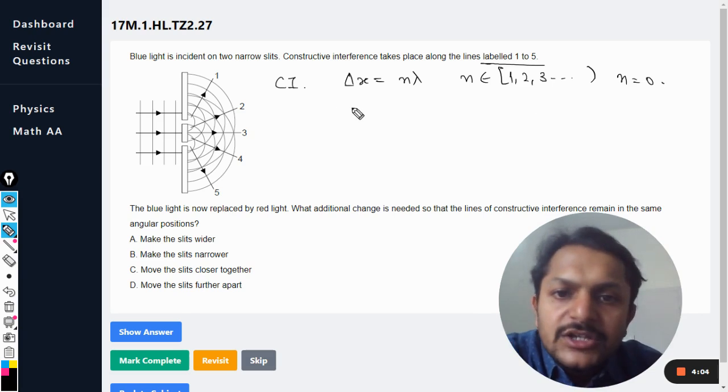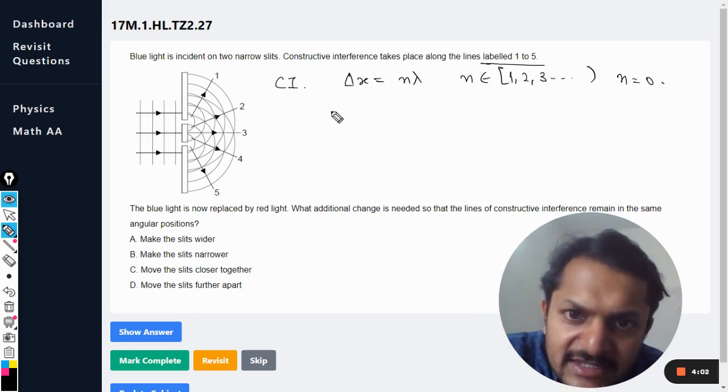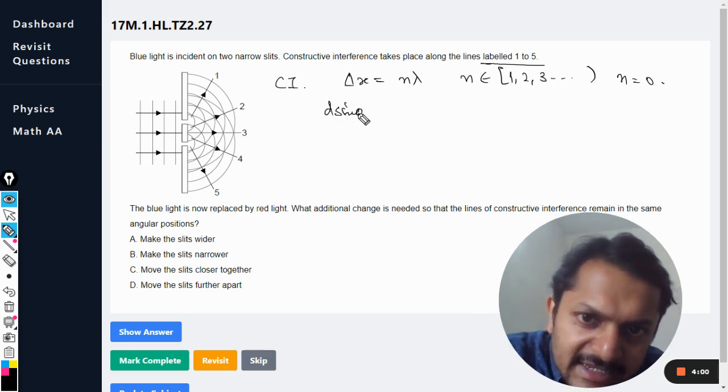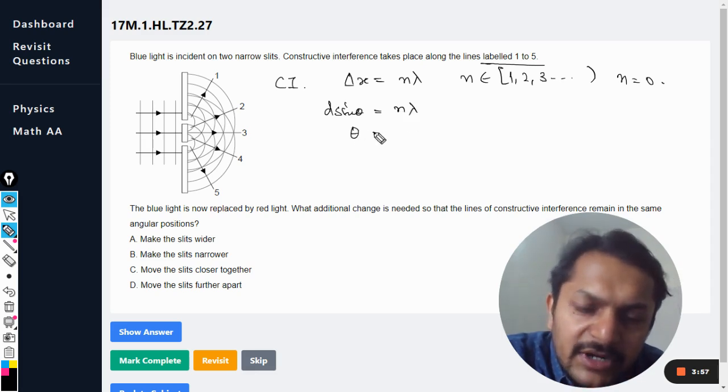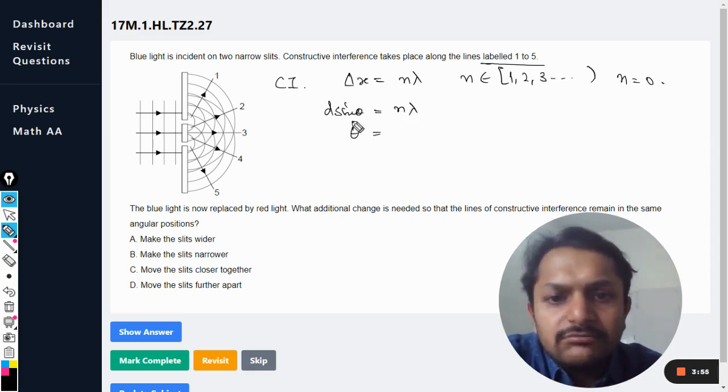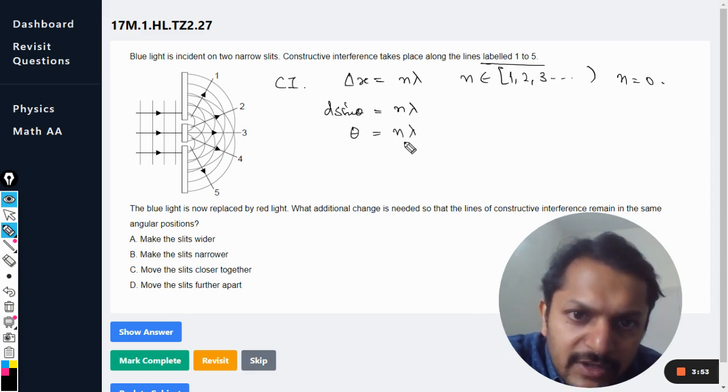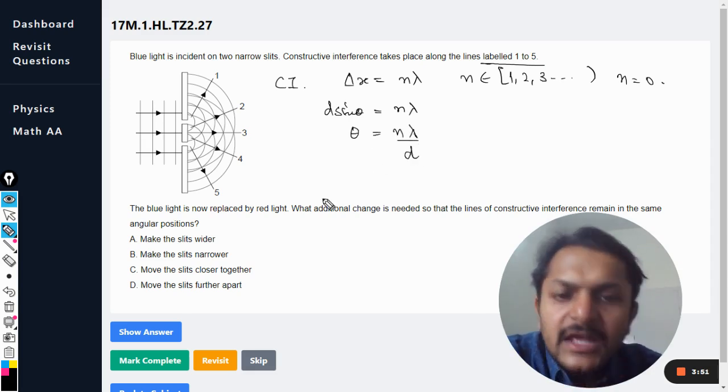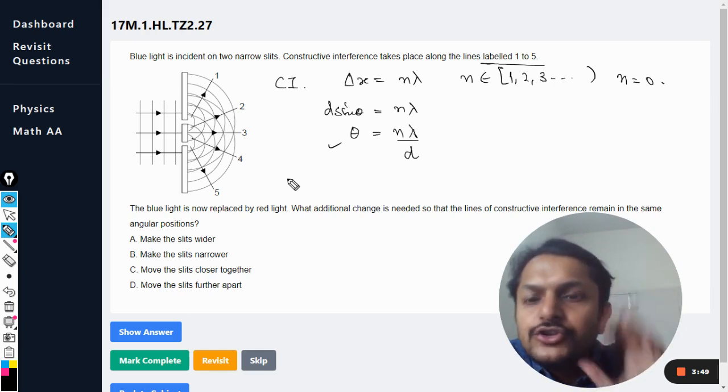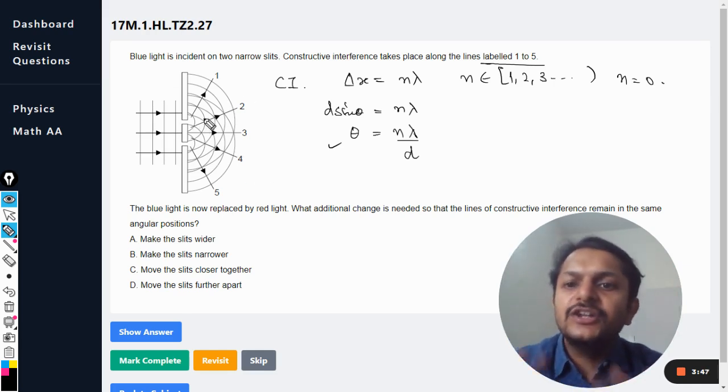So having said that, d sine theta is equal to n lambda. Sine theta can be written as theta because the angle is really very small, so it will be this. Now this is the formula that we are going to use. So they say that the angle should not change for the maximum. The angle should not change and the blue light is now replaced with red.